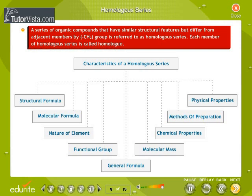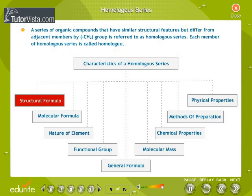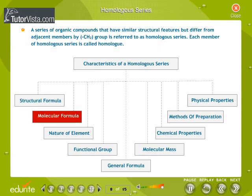Homologous Series. A series of organic compounds that have similar structural features but differ from adjacent members by a CH2 group is referred to as a homologous series. Each member of a homologous series is called a homolog. Characteristics of homologous series: All the members of the homologous series have the same structural formula. The molecular formula of different members differs from the previous and next member by CH2.